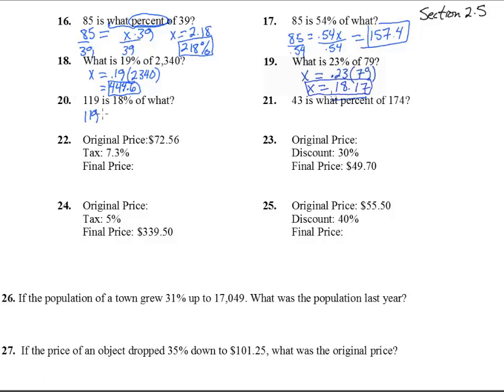119 is 18% of what? There, all we have to do is divide by .18, and we get x. Divide by .18, and x is going to equal 119 divided by .18, and we get 661.1.